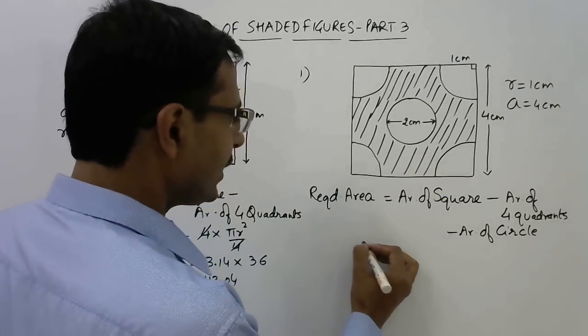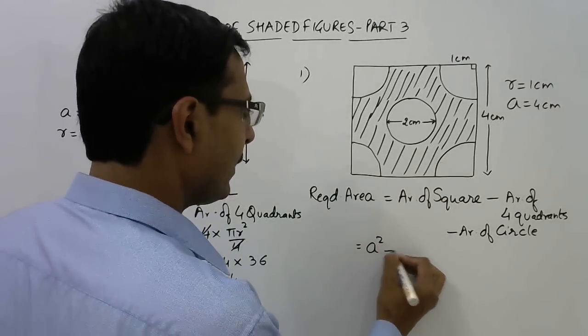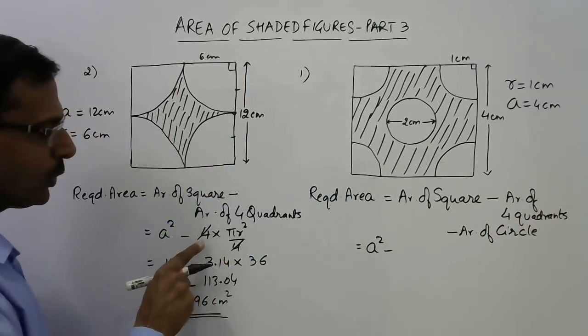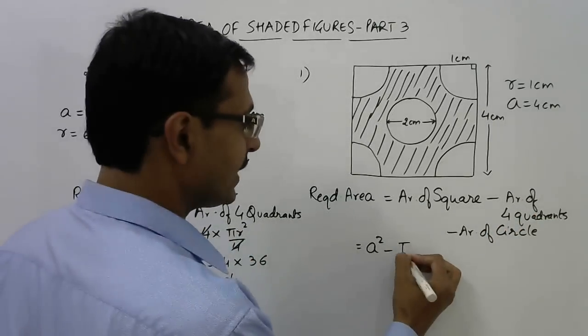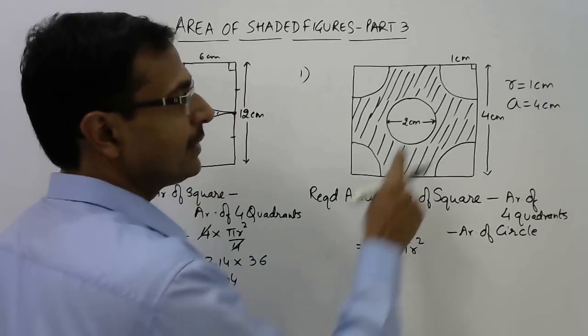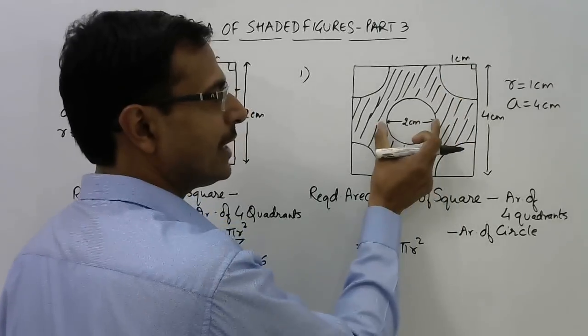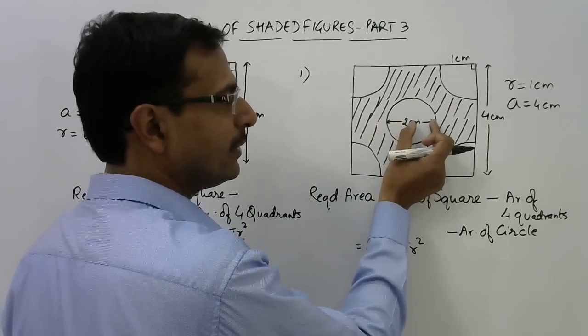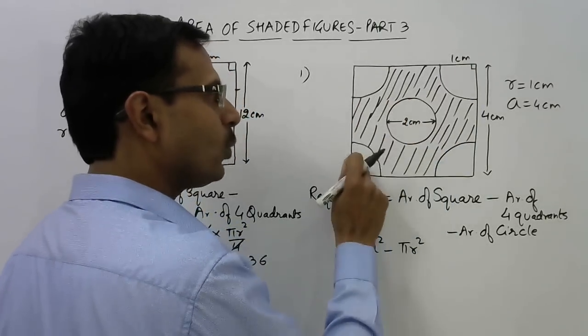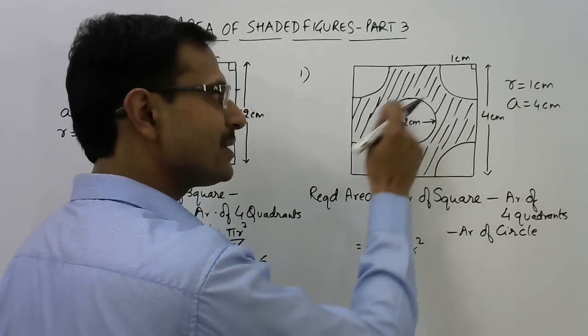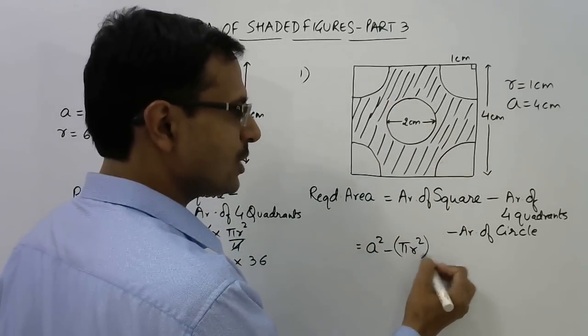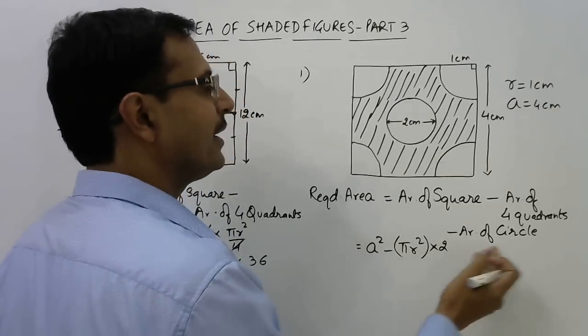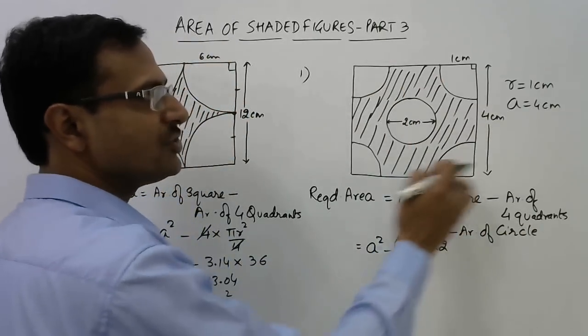Let us see here now. Area of square is a². Area of four quadrants - if there are four quadrants they make a circle, so that is π r². The radius is one centimeter here, and the diameter is two means radius is one here. If they make one circle of radius one centimeter, this is another circle of radius one centimeter. We just need to double this to find the area of the entire unshaded portion.